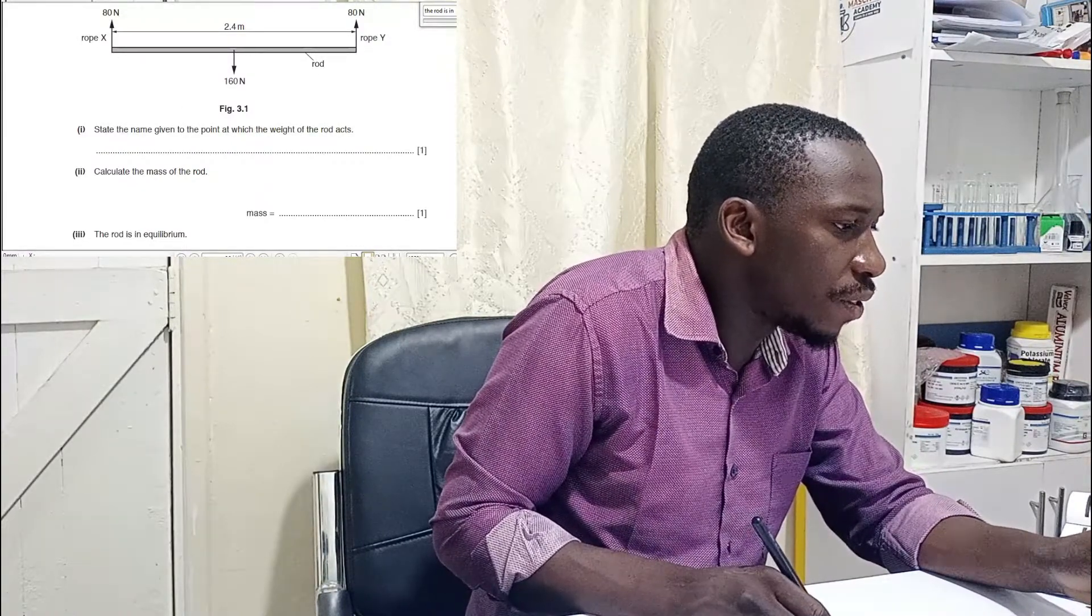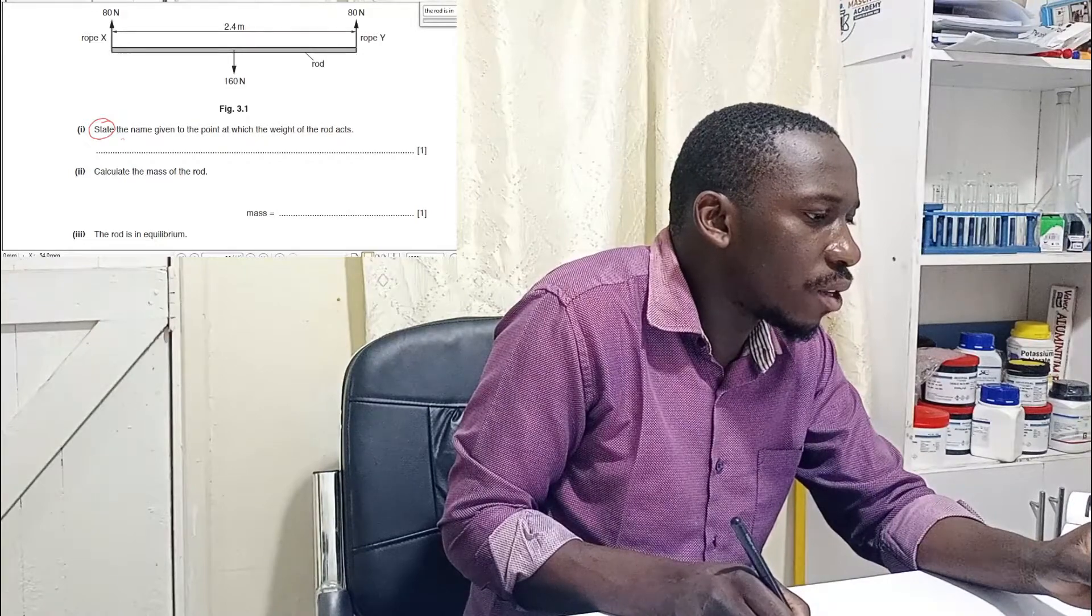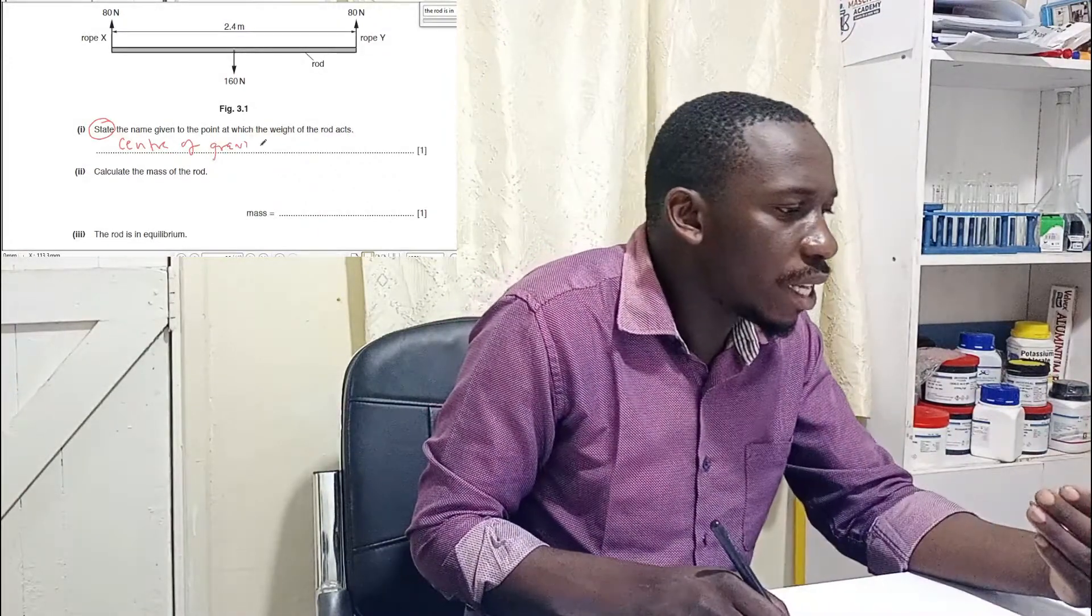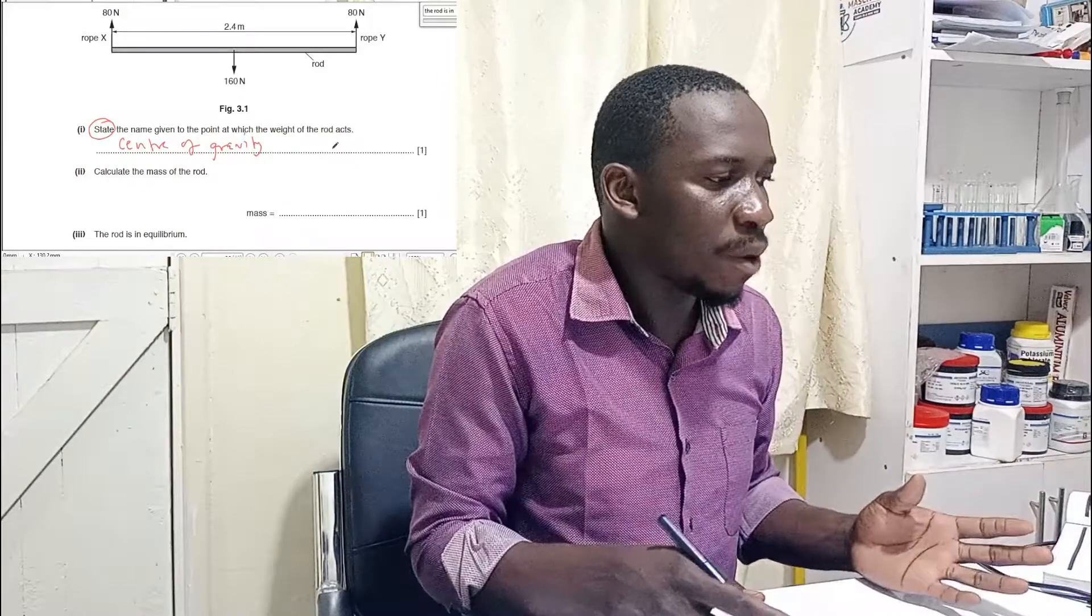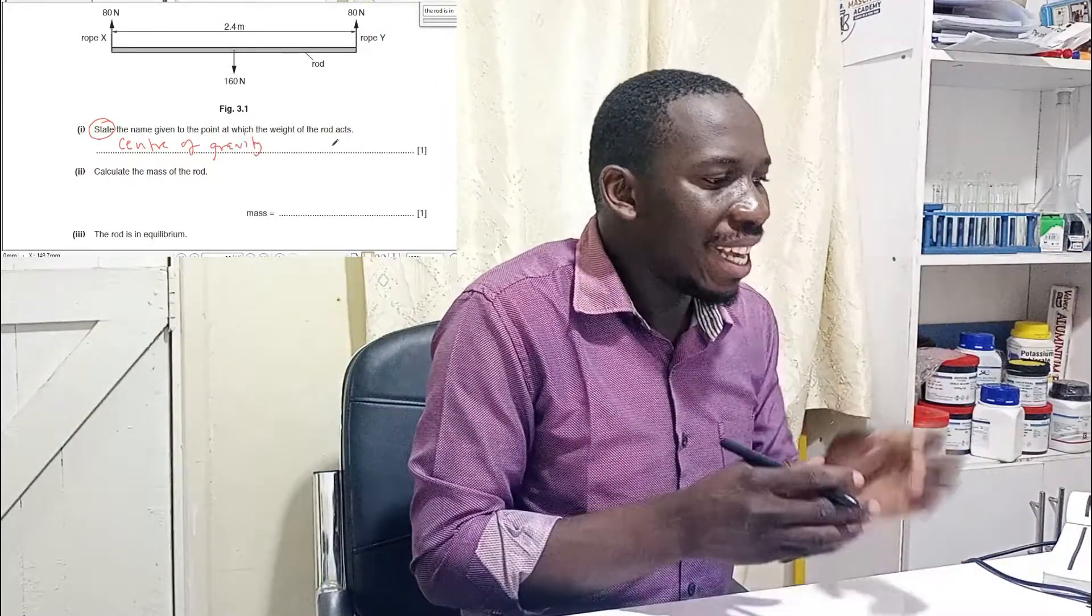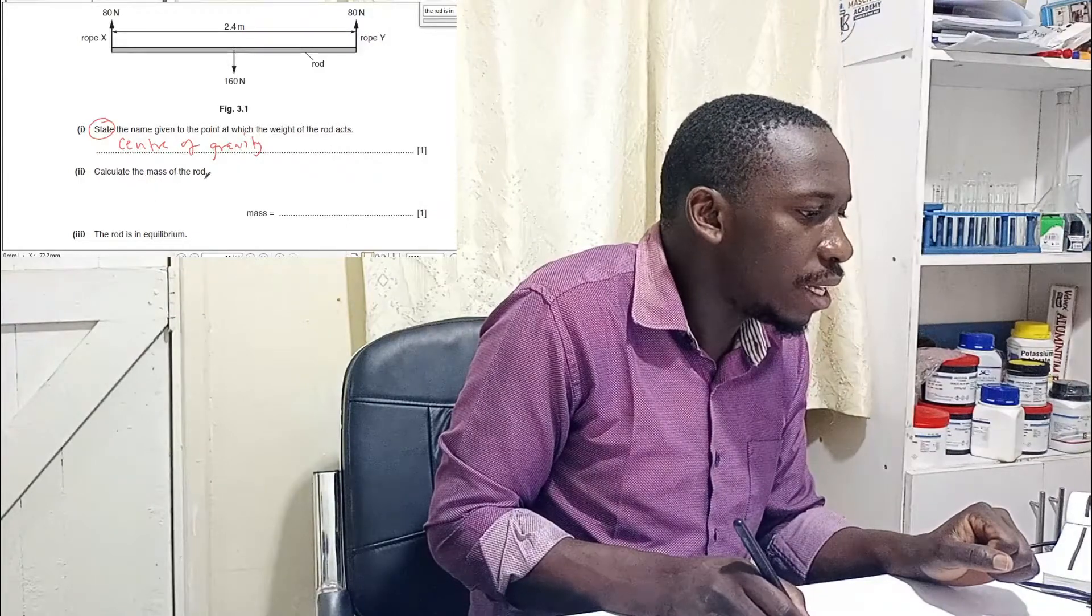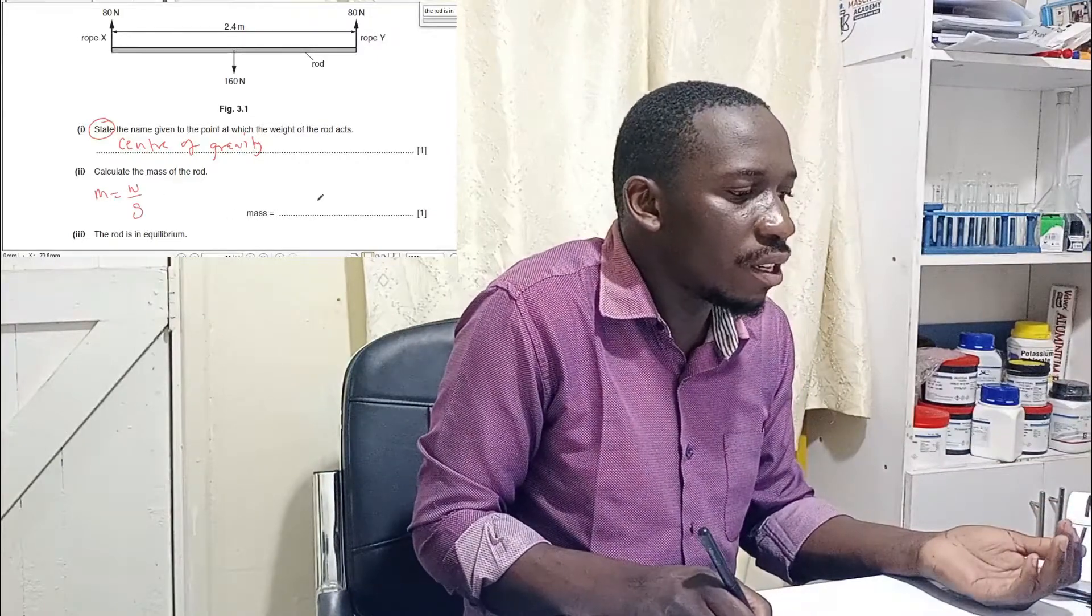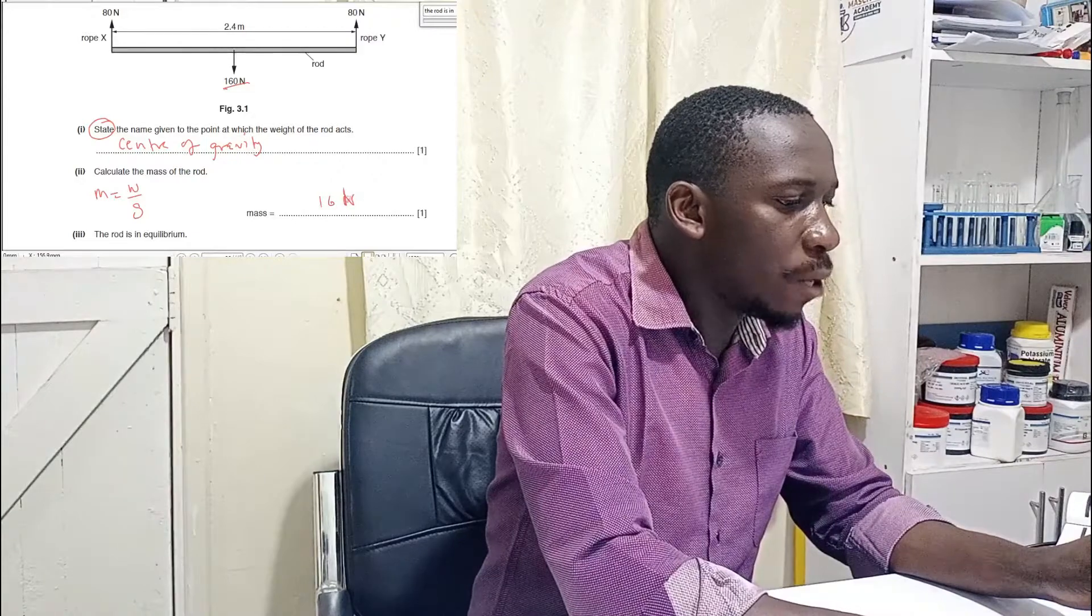Roman 1, state the name. Look at this. This is the command word here. State the name given to the point at which the weight of the road acts. And this is center of mass or you can call center of gravity. So this is center of gravity. Just state. Some students will start saying that, oh, the point at which the weight of the road acts is center of gravity. That is a waste of time. We have been told to state, don't repeat any point on the question. It will add you no mark. Calculate the mass of the road. From here, we know that mass is given by W divided by G. Now, give your answer direct. That is 160 divided by 10, which is just 16 kilograms. Now, my main question is this.